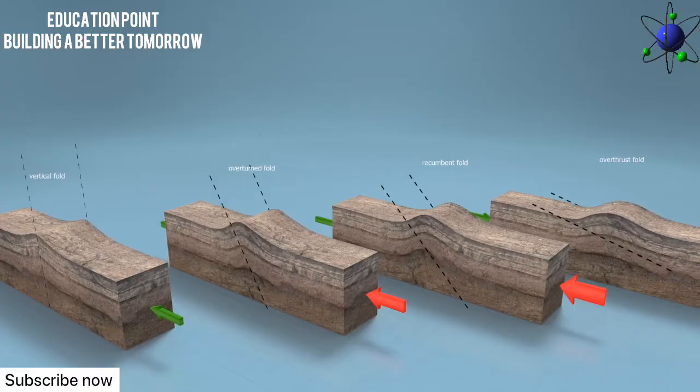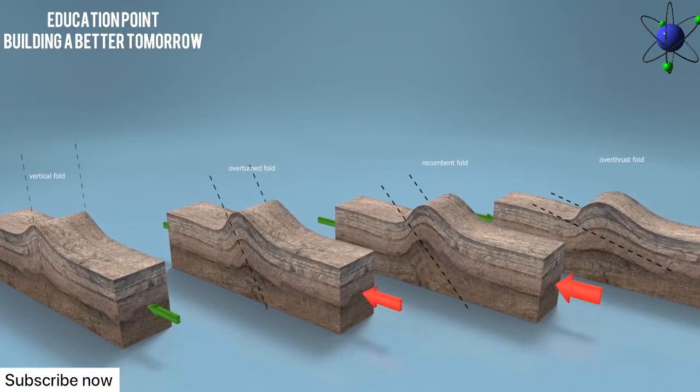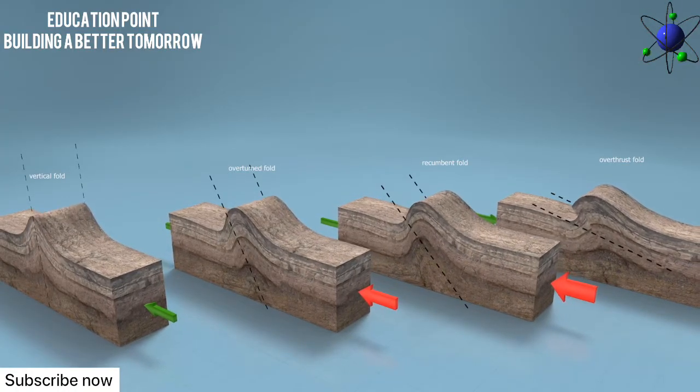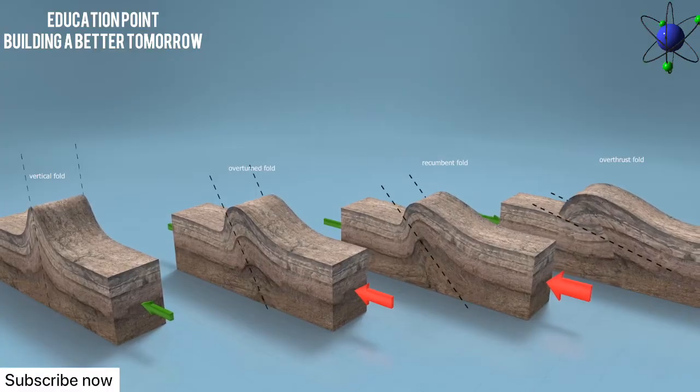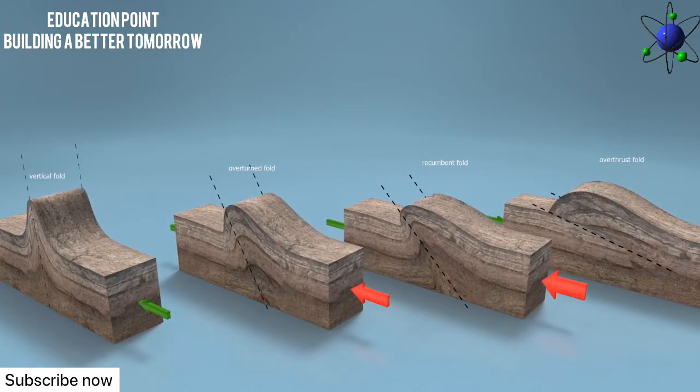Lateral compressive forces acting on plastic rock cause the rock layers to move upwards or downwards and thus to form anticlines and synclines.